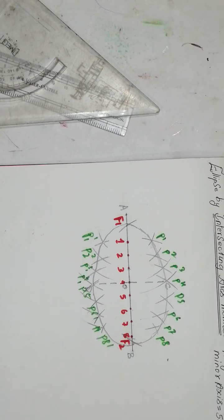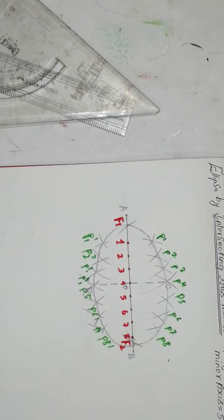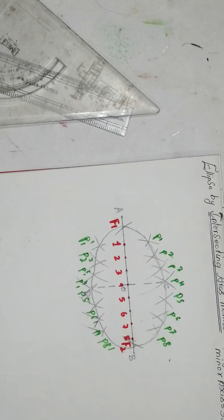This is a very easy and simple method for drawing an ellipse using the intersecting arc method with major axis 100mm and minor axis 55mm. If you like this video, please share with your friends, subscribe, comment, and share.